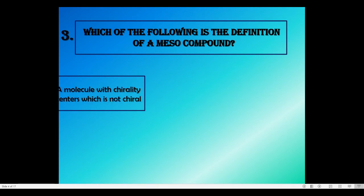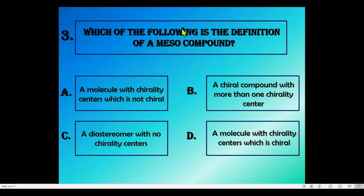Next question: which of the following is the definition of a meso compound? We can point to tartaric acid as a fundamental example of meso compounds. Tartaric acid — the DL mixture followed by the meso compound. If there is a presence of any symmetry elements in the compound, that compound becomes non-chiral even though it contains a chiral center.